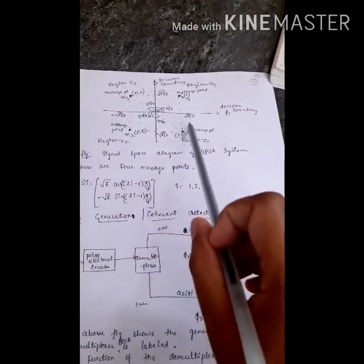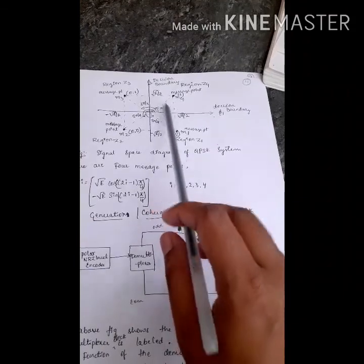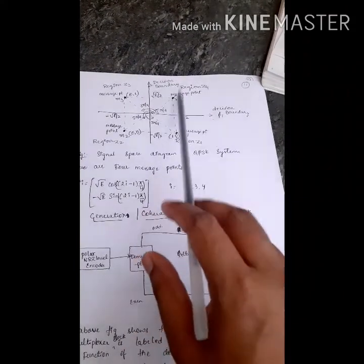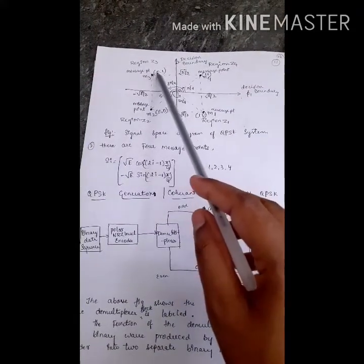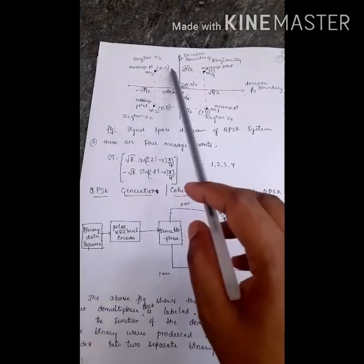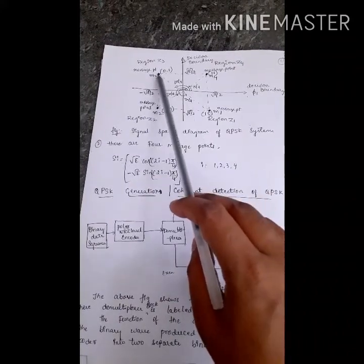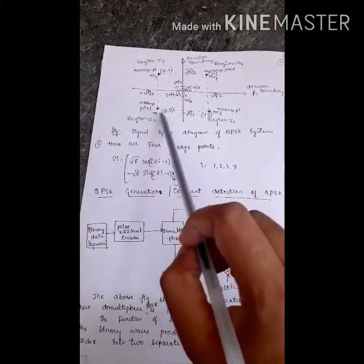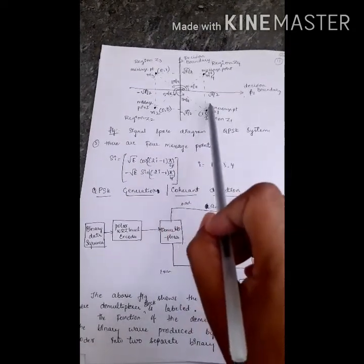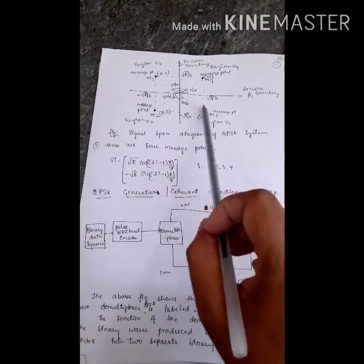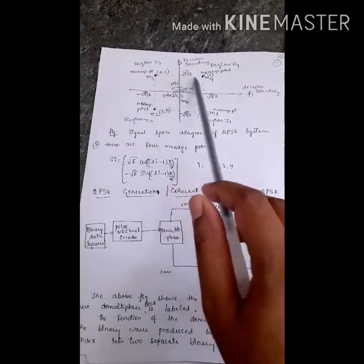In summary: for 11, the coordinates are (+sqrt(E/2), +sqrt(E/2)) — both positive, in the first quadrant. For 01, coordinates are (-sqrt(E/2), +sqrt(E/2)). For 00, coordinates are (-sqrt(E/2), -sqrt(E/2)) — both negative. For 10, coordinates are (+sqrt(E/2), -sqrt(E/2)). These message points are all interconnected in the signal space diagram of the QPSK signal.